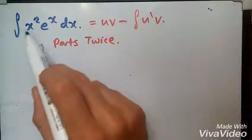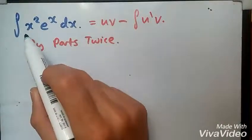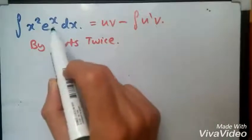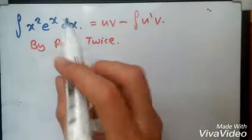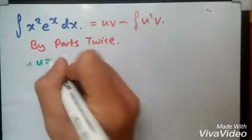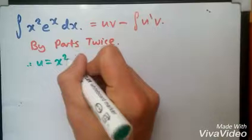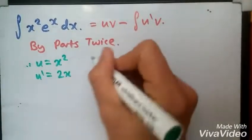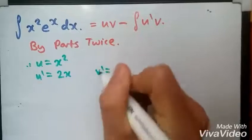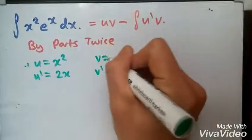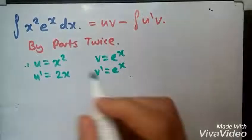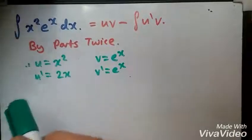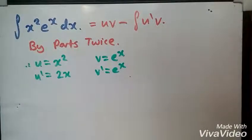This should be u because if you differentiate this it reduces to 2x. If you integrate this it will still be x. Let u equal x squared and differentiate this to get 2x. Likewise, let v prime equal e^x and integrate this to get e^x.